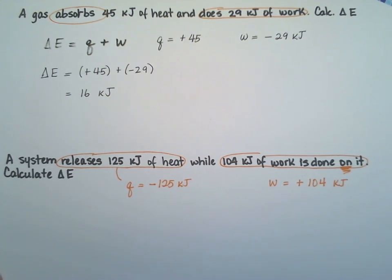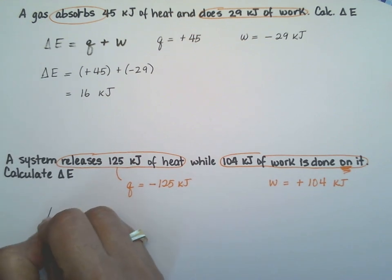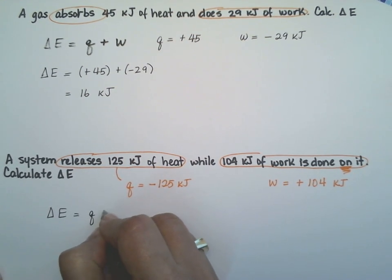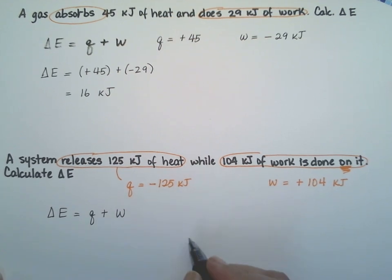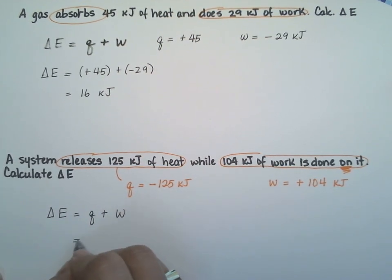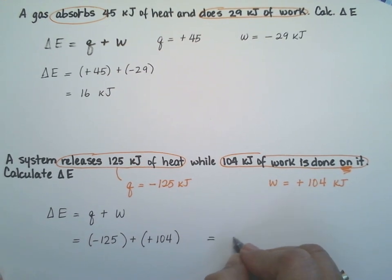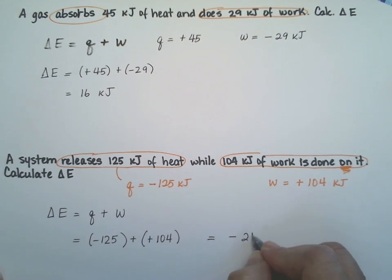And now we're ready to put the numbers in our formula. So the change in energy equals the heat plus the work. That is minus 125 plus 104. That's going to equal to minus 21 kilojoules.